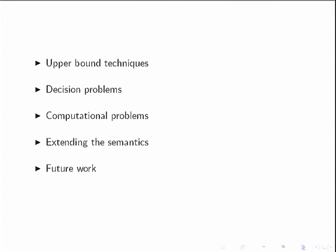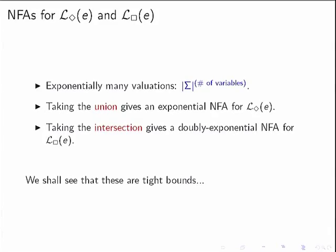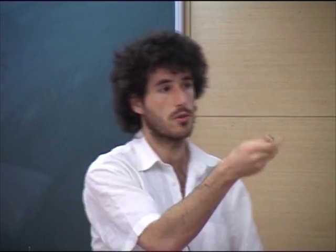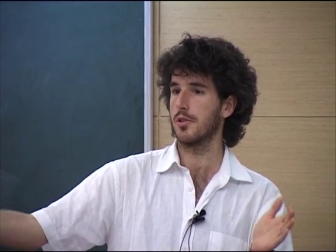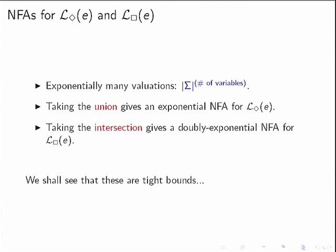Starting with an easy brute-force upper bound: since variables are sent to symbols of the alphabet, there can be exponentially many valuations (|sigma| to the power of the number of variables). Taking the union of all instantiated expressions with the standard union construction gives an exponential NFA for possibility semantics. For certainty semantics, taking the product of all automata gives a double-exponential NFA. I will show later that these are tight bounds.